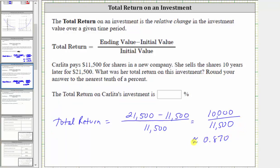Which means as a percentage we have approximately 87.0%. So the total return on Carlita's investment is approximately 87.0%.